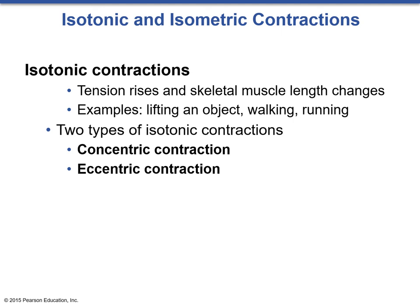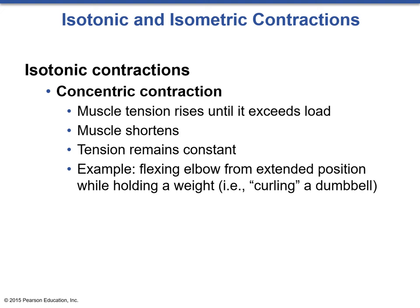There are two major types of muscular contractions: isotonic and isometric. Isotonic contractions are where tension rises and the skeletal muscle length changes, as occurs when we lift an object, walk, or run. The two subtypes are concentric, or shortening, and eccentric, or lengthening. In concentric contraction, muscle tension rises until it exceeds the load and the muscle shortens while tension remains constant—an example is flexing the elbow from an extended position, like curling a dumbbell. Most actions that initiate a movement are concentric in nature.